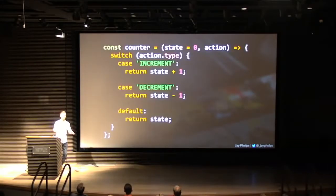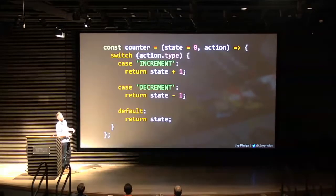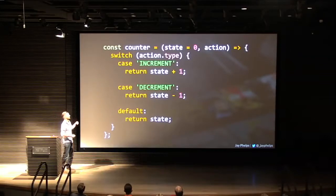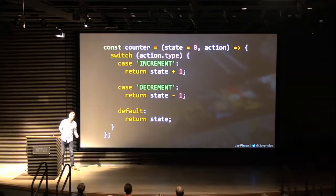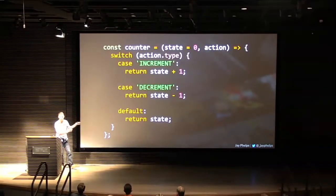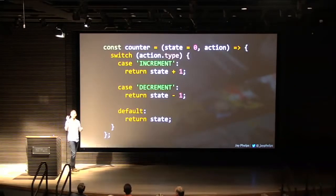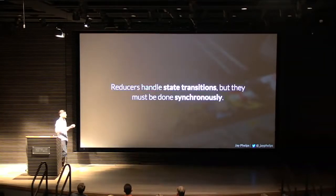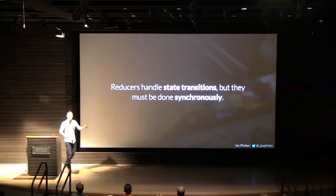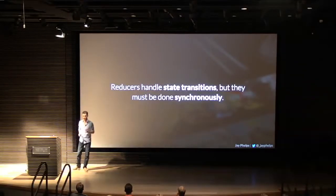In the real-world Redux use case, it's like this counter: you switch over the action types, and whenever you receive an increment, you increment the state, and when you receive a decrement, you decrement it. So reducers have your state transitions, but they must be done synchronously.